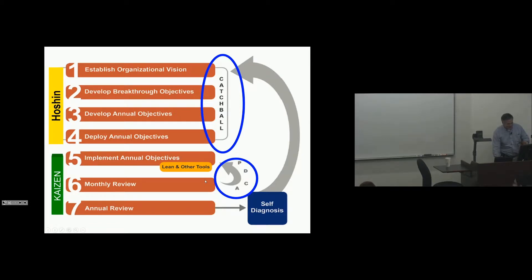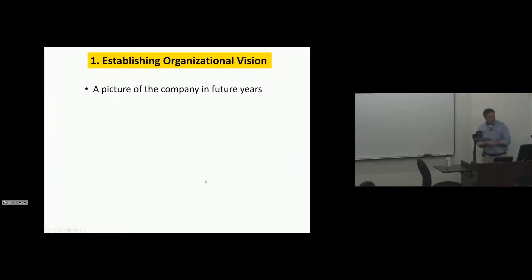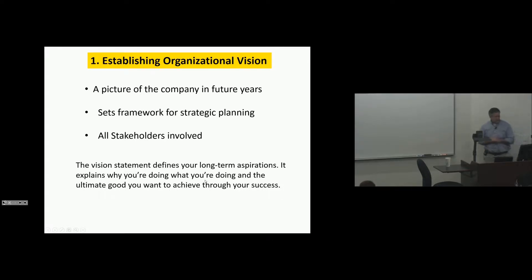And then obviously, the continuous improvement for the Kaizen efforts. So establishing organizational vision, it's a picture of the company in the future years. It sets a framework for strategic planning and all stakeholders are involved. All stakeholders. Everybody that has something to do with it are aligned with this vision and help develop it. The vision statement defines your long-term aspirations. It explains why you're doing what you're doing and the ultimate good you want to achieve through your success.